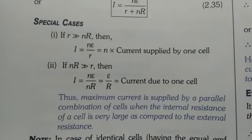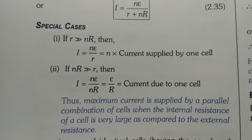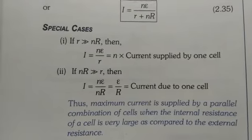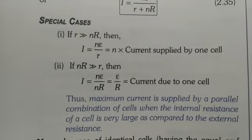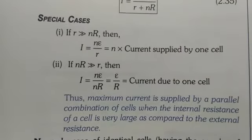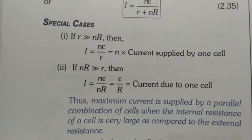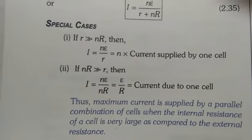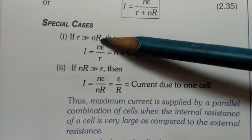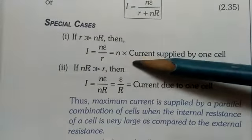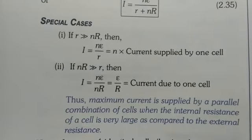So here students, you can see just opposite thing is going on. In case of series, external resistance should be more than internal to draw the maximum amount of current. But in parallel combination, if we want to draw the maximum current, then the internal resistance of the cell should be very high than external one. Because in this case, you are getting N into current supplied by one cell, that means maximum amount of current.